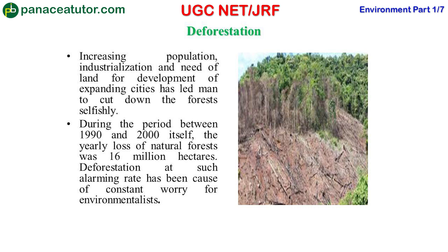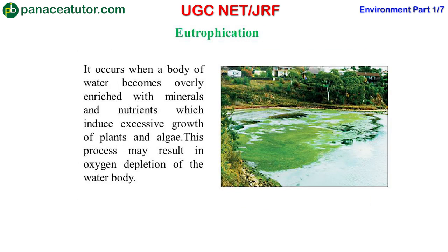Next is eutrophication. In eutrophication, a water body gets converted into land as plants and microbes grow in it. Eutrophication is when a body of water becomes overly enriched with minerals and nutrients, which induces excessive growth of plants and algae. This process may result in oxygen depletion of the water body — when plants, microbes, and algae start growing, the dissolved oxygen content in the water body diminishes, and the water body converts into land.